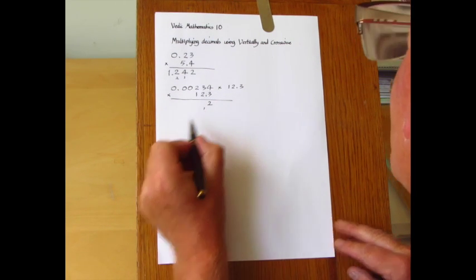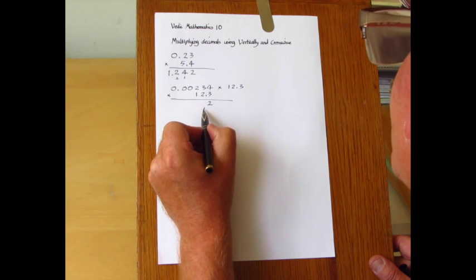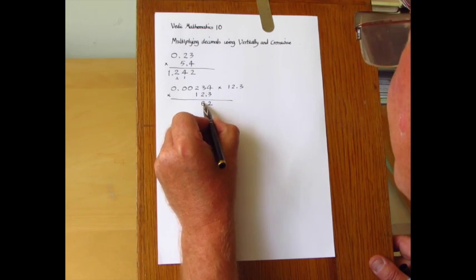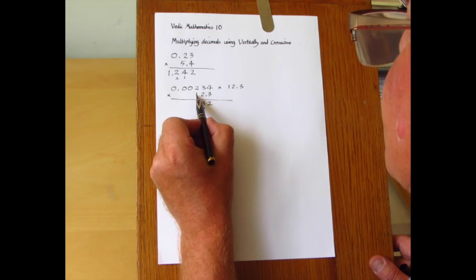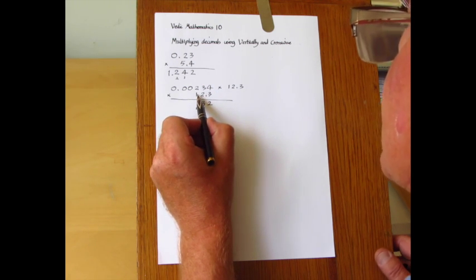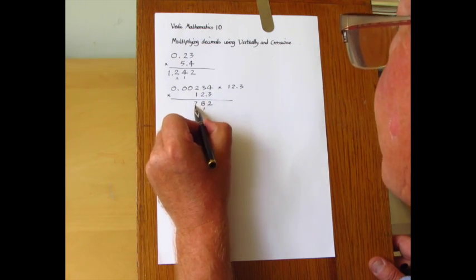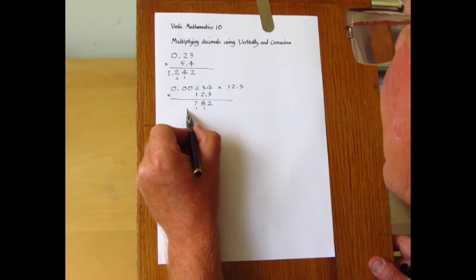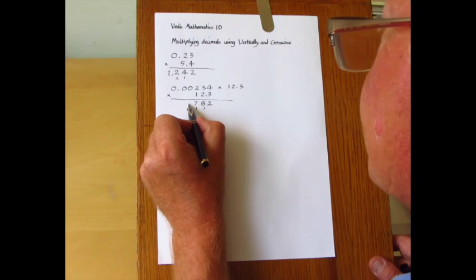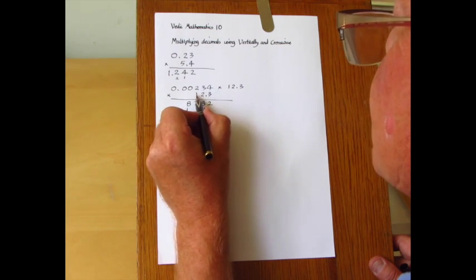And now we'll do the multiplication using the three-digit pattern. 4 times 3 is 12. We have 9 add 8 is 17, add 1 is 18. 6 add 6 is 12, add 4 is 16, add 1 is 17. We have 2 add 4 add 3 makes 7, add 1 is 8. And the last step, 2 times 1 is 2.